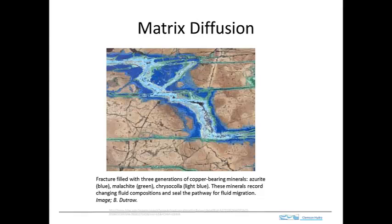Another important process that combines fluid flow and diffusion is matrix diffusion. This occurs where you have transport through high permeability channelways in porous media that are flanked by lower permeability channelways. A fracture in a clay is really a classic example, but this also might be a sand bed sandwiched between clay beds or other similar kinds of scenarios.